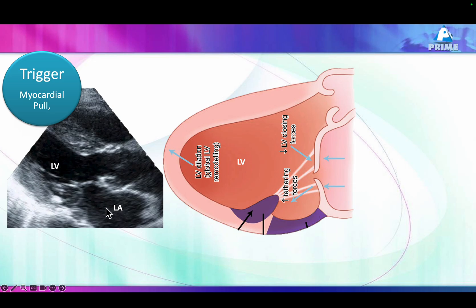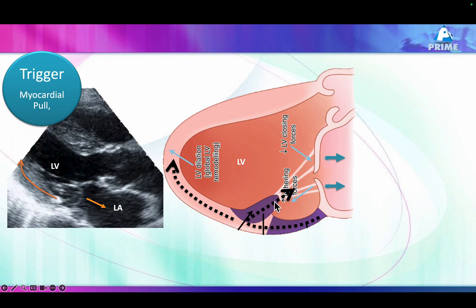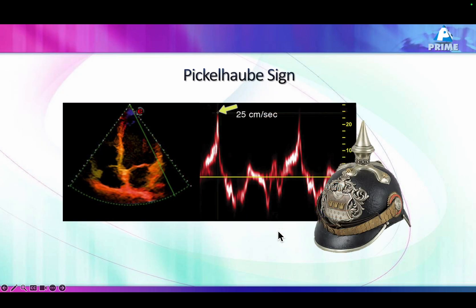This is the trigger — the myocardial pull. When mitral valve prolapse occurs, the valve moves into the left atrium and causes a pull of the chordae toward the left atrium, while the papillary muscle pulls it toward the apex. This causes a stretch in this area leading to arrhythmias. Because of this abnormal movement of the posterior wall, on tissue Doppler we get a very large S wave — an S wave more than 15 or 16 centimeters per second is abnormal, and this is called the Pickelhaube sign.